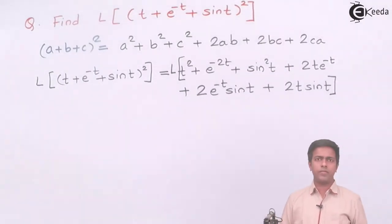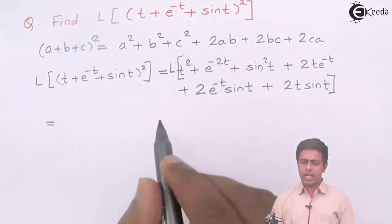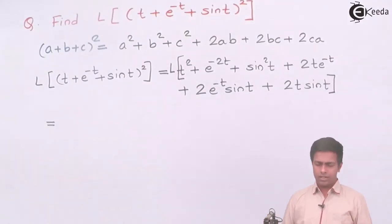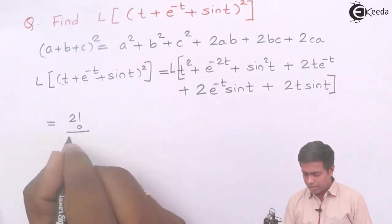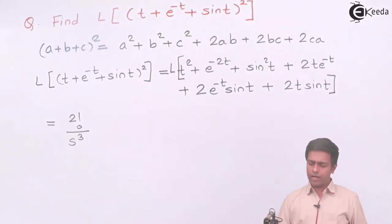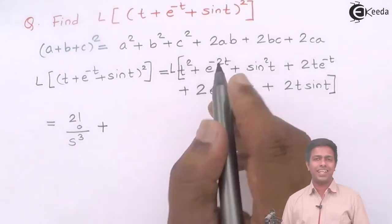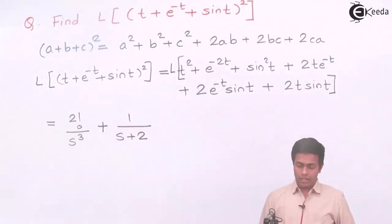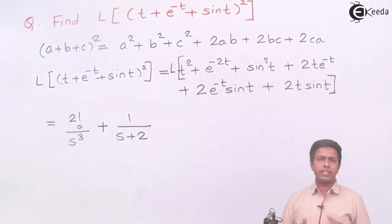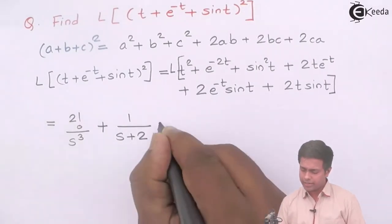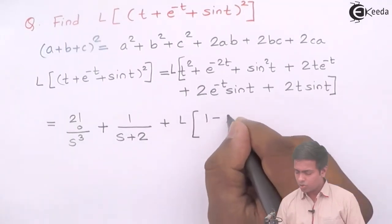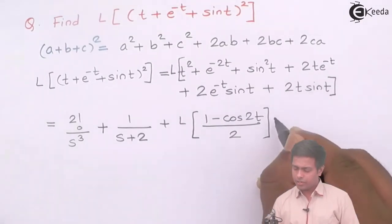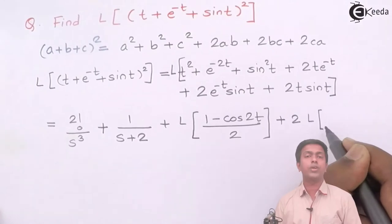We can take the Laplace of each term separately using the linearity property, since we have plus signs in between. Laplace of t² matches the property Laplace of t^n = n!/s^(n+1), giving 2!/s³ = 2/s³. Laplace of e^(-2t) is 1/(s+2). For sin²t, we don't have a standard property, so we reduce it: sin²t = (1 - cos 2t)/2.